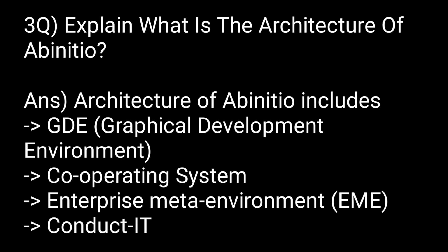Explain what is the architecture of Ab initio. The architecture of Ab initio includes GDE (Graphical Development Environment), cooperating system, enterprise meta environment (EME), and Conduct IT.